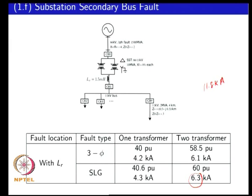By adding a reactor you could reduce the fault rating required for a large number of breakers. Potentially, the cost savings in circuit breakers 2 through 9 might be greater than the cost of the reactor being added. Of course, you will have to look at the voltage regulation introduced by adding that 1.5 milli-henry reactor, as well as the cost of the inductor and the losses introduced — but if it works out to be economical, you could add impedances to ensure your fault current level does not become excessive.